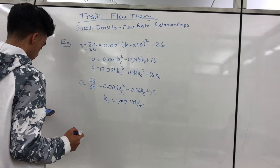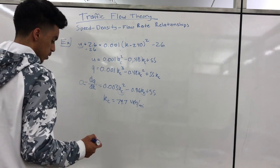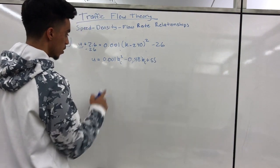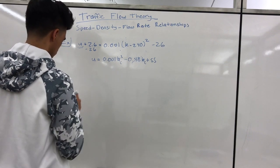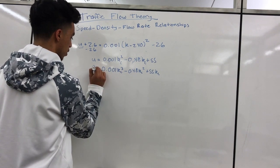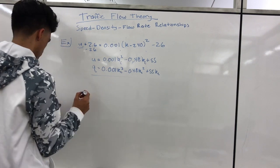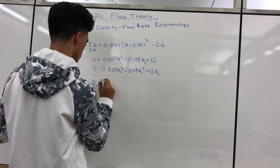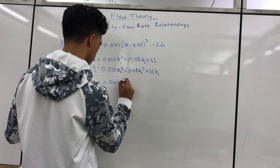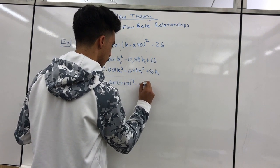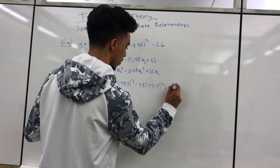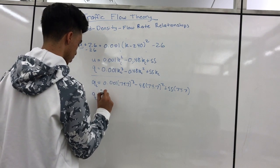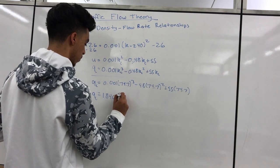Next, we solve for the capacity q_c by substituting k_c equals 74.7 into the equation for q. This gives us 0.001 times (74.7 cubed) minus 0.48 times (74.7 squared) plus 55 times 74.7. Simplifying, we get q_c equals 1846.8 vehicles per hour.